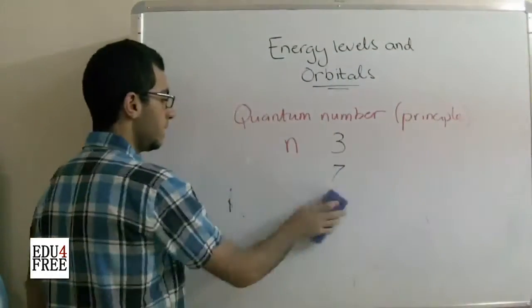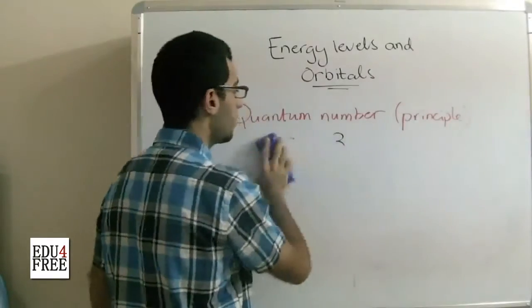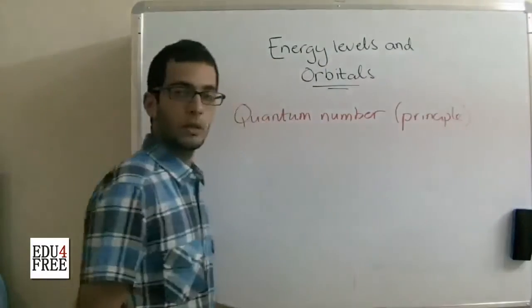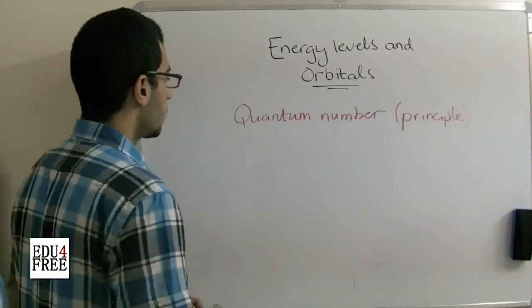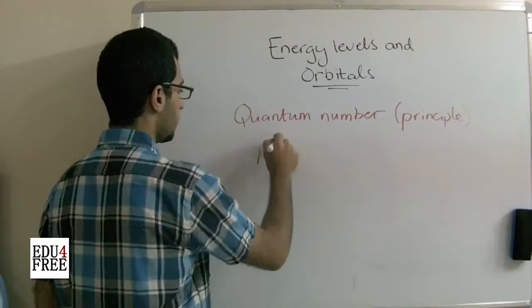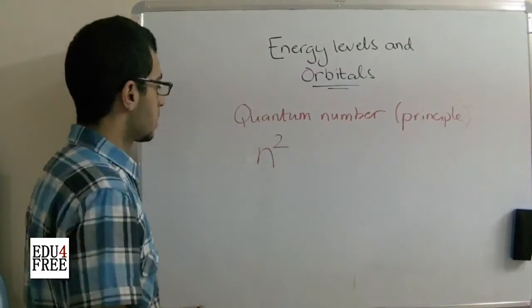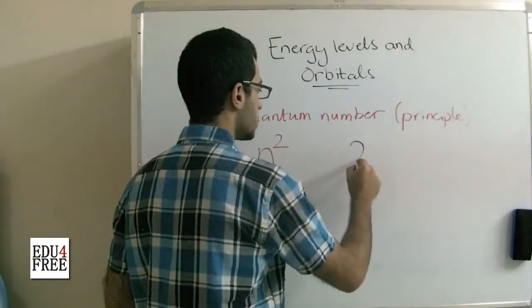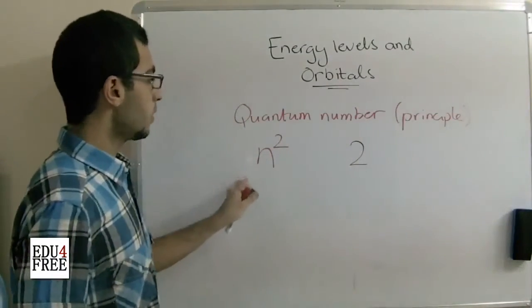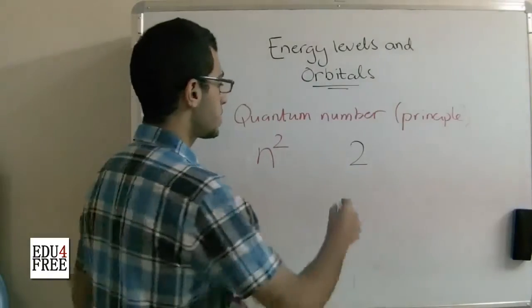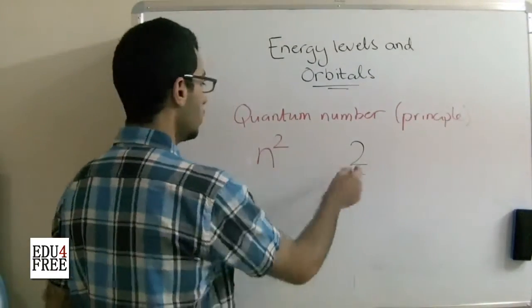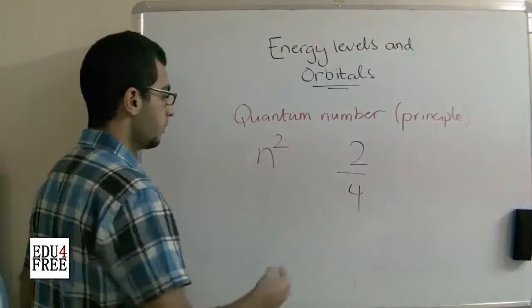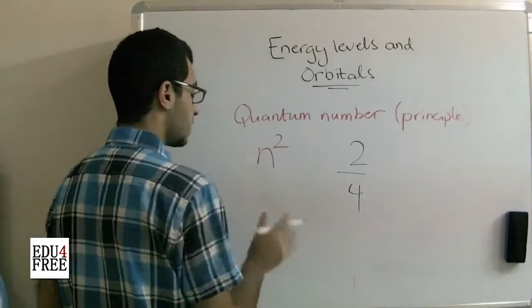In order to know the number of orbitals which are found in a certain energy level, we get it from this formula which is n of power 2. So for example, in the energy level which is L, the number of orbitals in this energy level is 2 of power 2 which is 4.